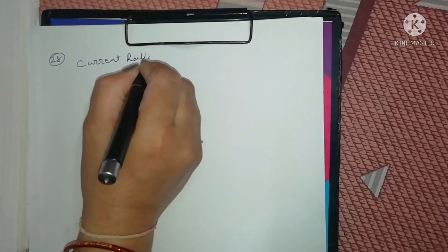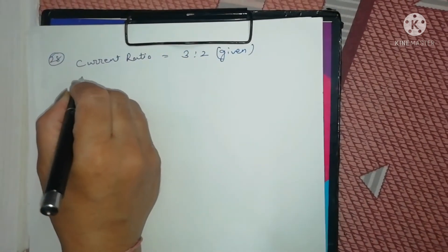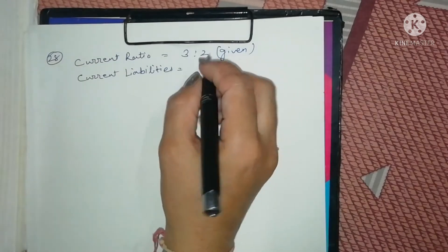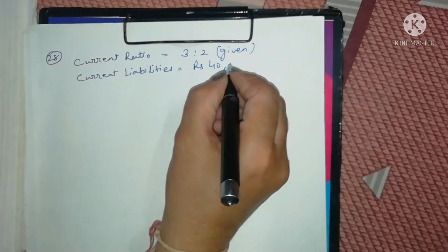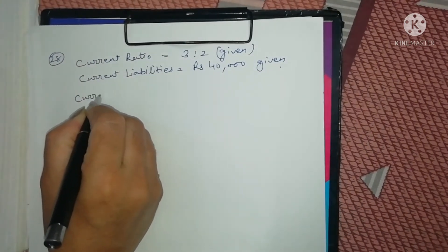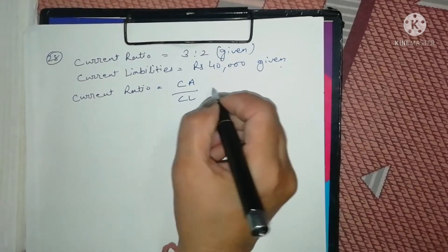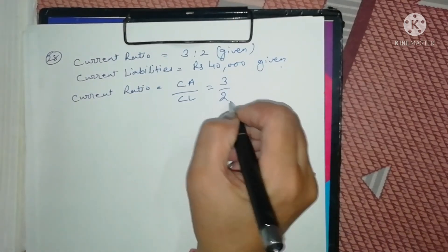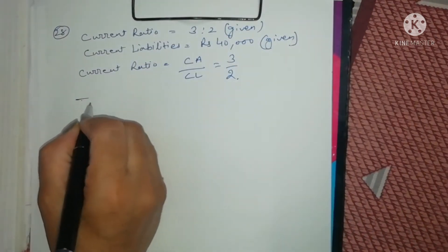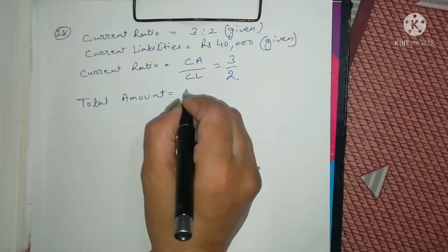Current ratio is equal to 3:2, that is given in the question, and we are also given current liabilities of rupees 40,000. As you know, current ratio equals CA upon CL, which means 3 represents current assets and 2 represents current liabilities. We have to find out the total figure in which both current assets and current liabilities are included.